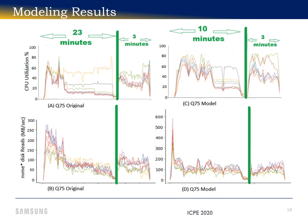Query 75 is a middle-of-the-pack query that shows a two times speedup for both engines and both methodologies. In this slide, we see CPU and disk activity for query 75 running on Presto for both the original and the model queries. Notice that query 75 has a barrier where all CPU and disk activity goes to zero.